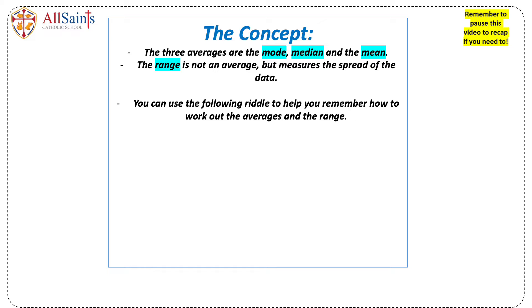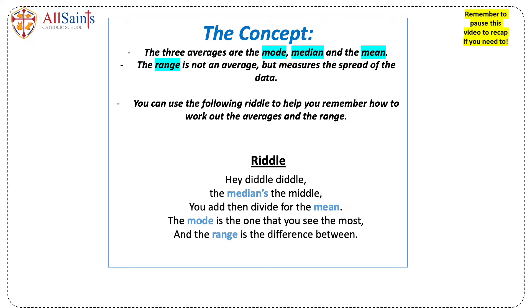When working out the averages and the range you can remember the following riddle: Hey diddle diddle, the median is the middle, you add then divide for the mean. The mode is the one that you see the most and the range is the difference between.